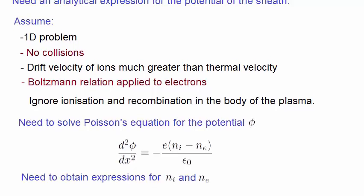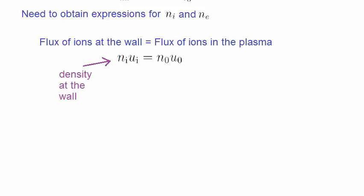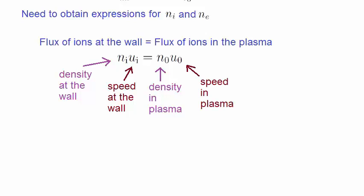We start by saying that the flux of ions at the wall must be equal to the flux of ions from the plasma. This is just simple conservation of charge. It can be symbolized by this, where Ni is the density at the wall, Ui is the speed at the wall, N0 is the density in the bulk of the plasma, away from the wall, and U0 is the speed in the bulk of the plasma.